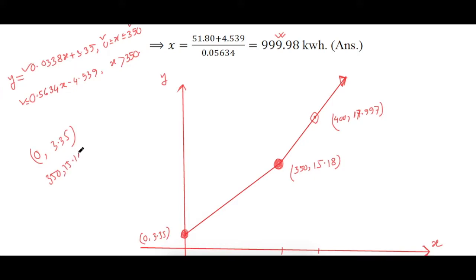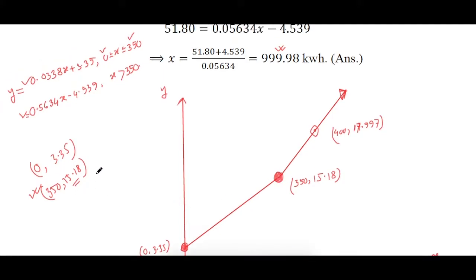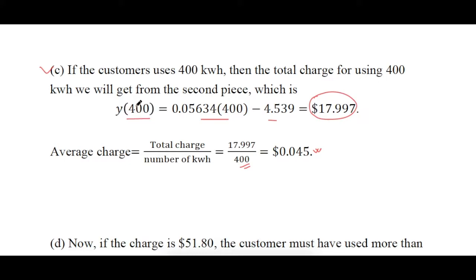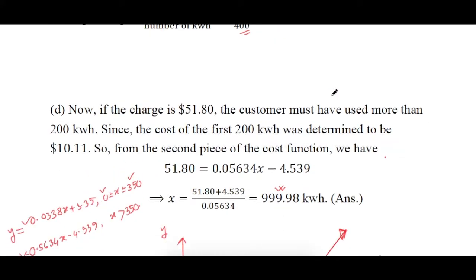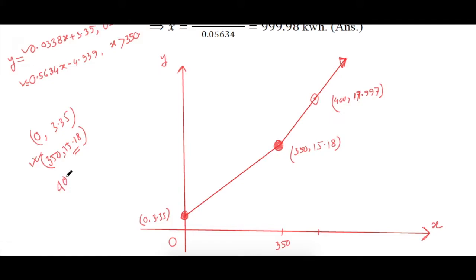Putting x = 350 into y1 gives the endpoint (350, 15.18). The second line starts exactly from this same point, since substituting 350 into y2 also gives 15.18 — so the lines connect. A second point for the second line is (400, 17.997), which we already calculated.